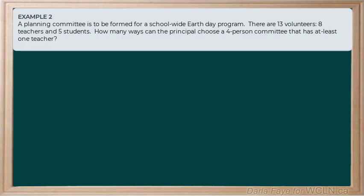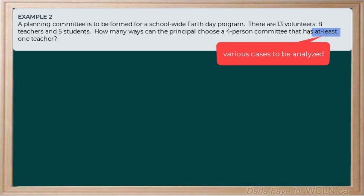Our next example says a planning committee is to be formed for a school-wide Earth Day program. There are 13 volunteers: eight are teachers and five are students. It wants to know how many ways the principal can choose a four-person committee that has at least one teacher. The phrase 'at least' gives us a big clue about how we need to analyze this problem — it tells us there are a number of different cases or scenarios we're going to need to analyze.